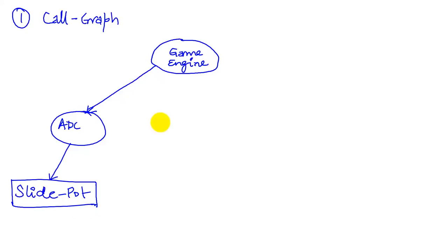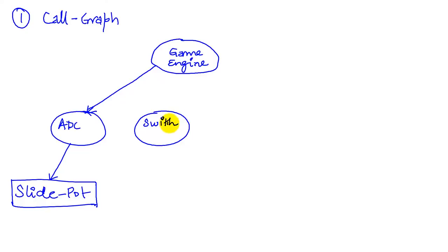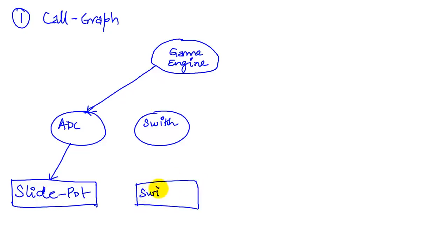The second module is the switch module, which interfaces with the switch hardware — our buttons. All the buttons and switches on our system are going to be managed by this module.